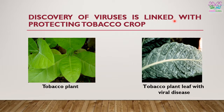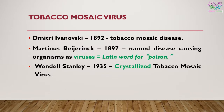The discovery of viruses is linked with protecting the tobacco crop. When a tobacco plant gets a viral disease, it deteriorates in quality. The disease making tobacco sick is due to tobacco mosaic virus, identified by Dmitry Ivanovsky in 1892. Martinez in 1897 named the organism causing disease in tobacco plants as 'viruses' — a Latin word for poison. And Wendell Stanley in 1935 crystallized tobacco mosaic virus and defined its structure.